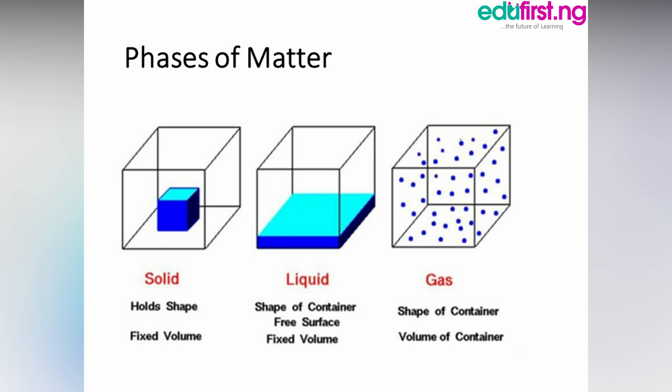Solid holds its own shape, while the shape of the liquid depends on the container. The same thing applies to gas — the shape of the gas also depends on the container. Solid has a fixed volume, and the same thing applies to liquid — it has a fixed volume and also has a free surface. For gas, the volume depends on the container; that is, it takes the volume of the container.